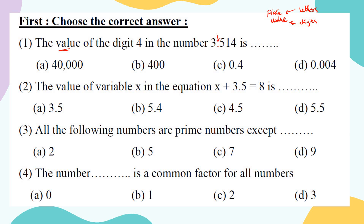Start by identifying your places from the decimal point: ones, tenths, hundredths — this is the 'th' family. Here we have thousandths. To find the value of the digit 4, I place zeros in the other positions. The right answer is D.